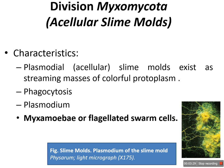The myxomycete or flagellated slime cells are shown in the picture. These flagellated slime cells are yellow in color and give a slimy appearance.